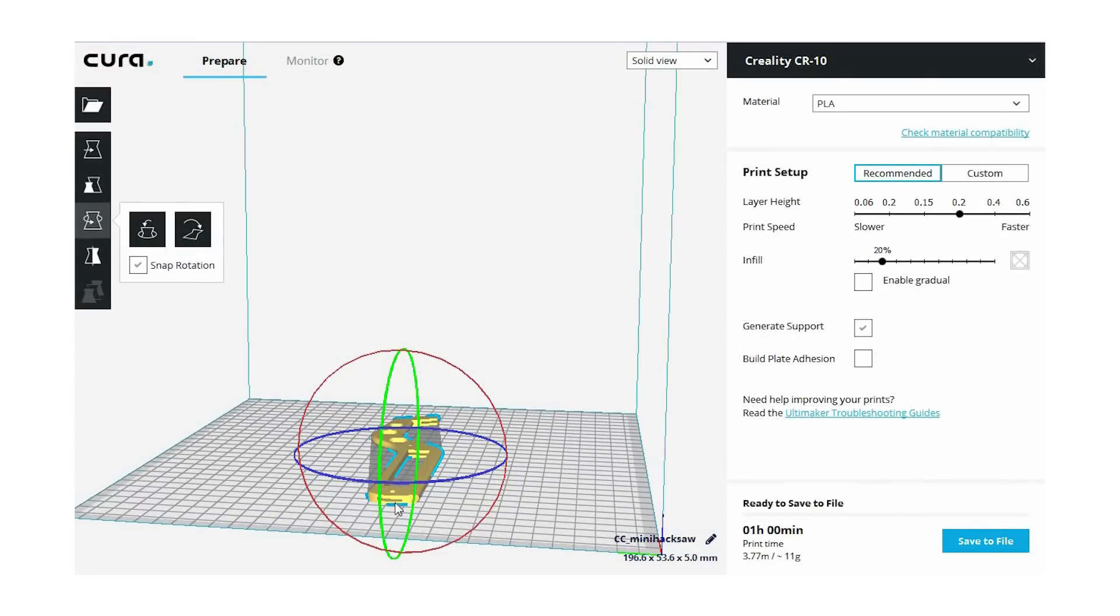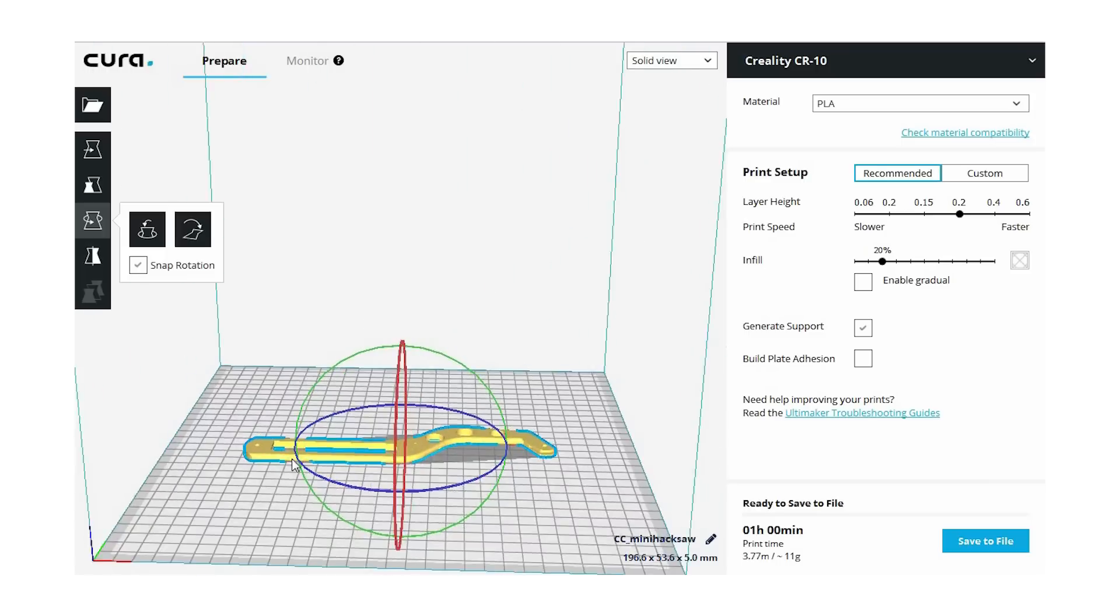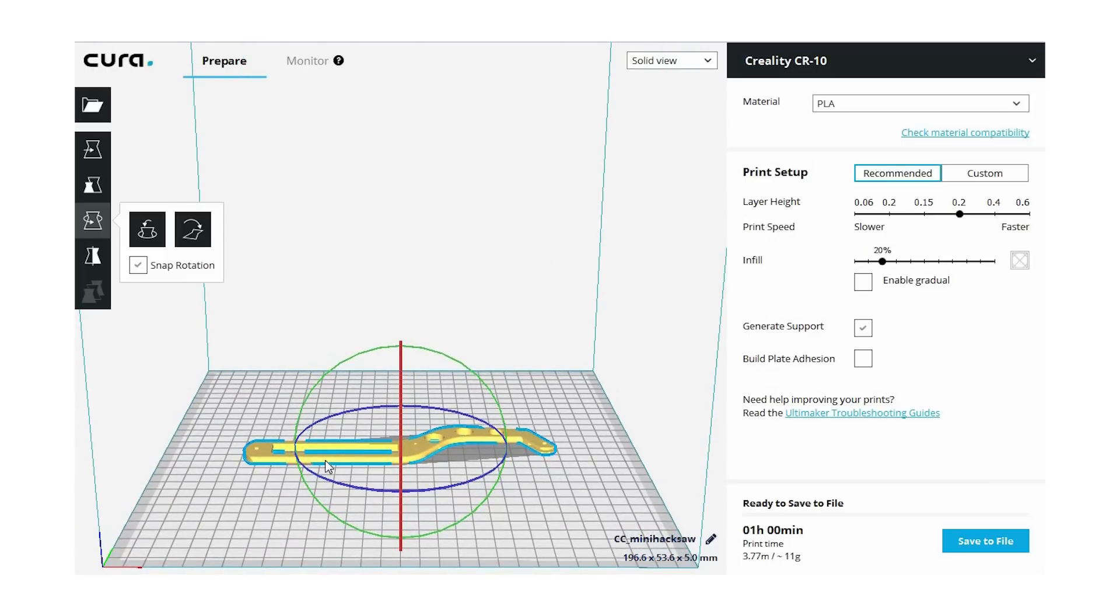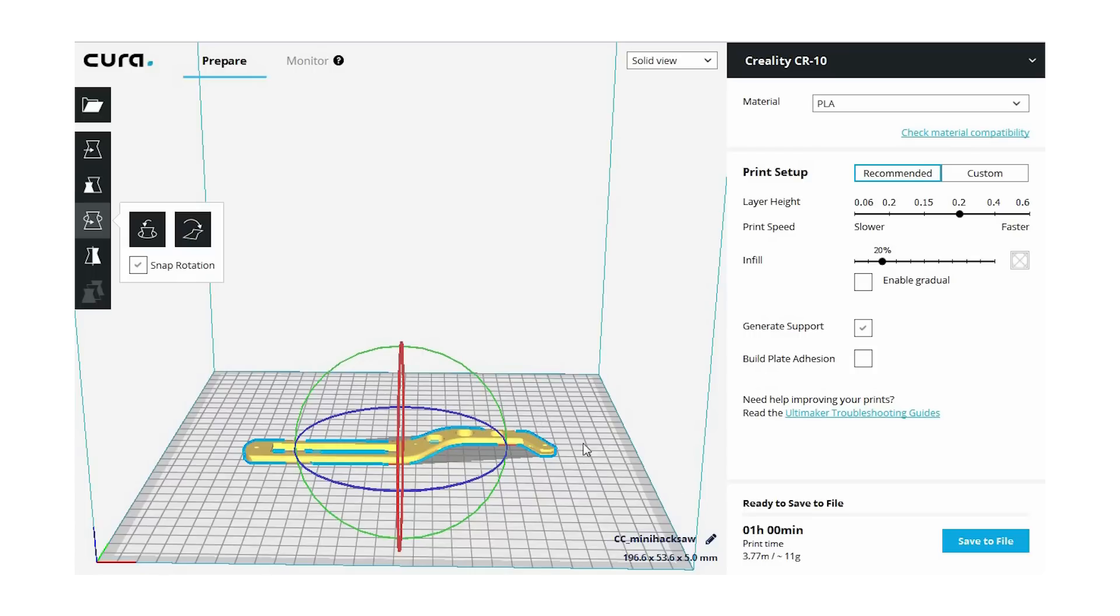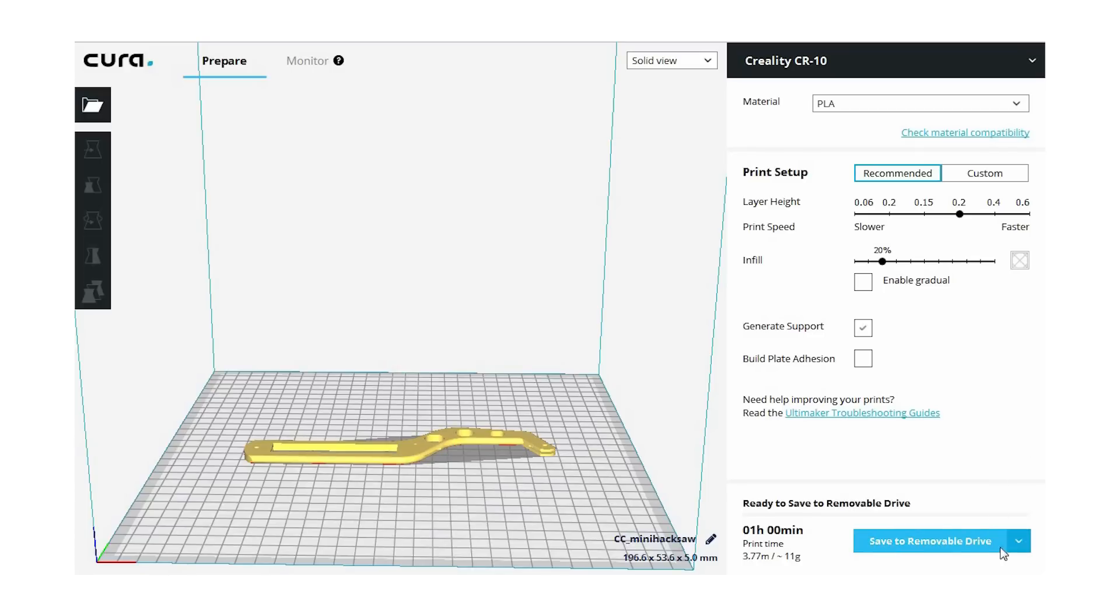Now I won't go into much detail about slicer programs on this channel except to say that you do need one in order to bring the model from your repository or wherever you got it from into your 3D printer. So this one's called Cura and you simply set up your settings. You would then export it out to your SD card and once it's saved to your SD card you're good to bring it over to your printer and start printing.